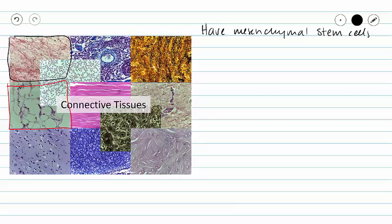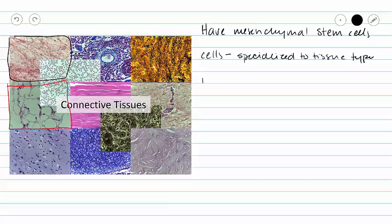Connective tissues have two major components: cells and matrix. The cells are specialized to the particular type of connective tissue. Our matrix, sometimes called the extracellular matrix, is made of extracellular fibers and ground substance.